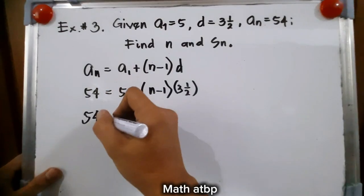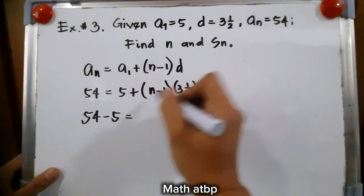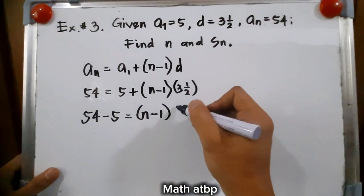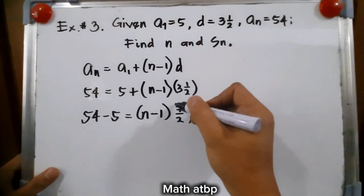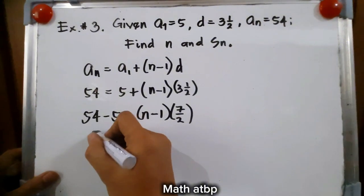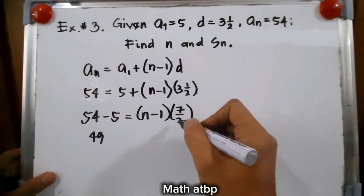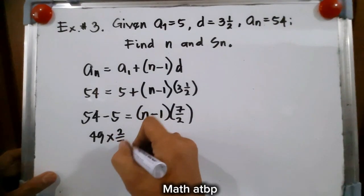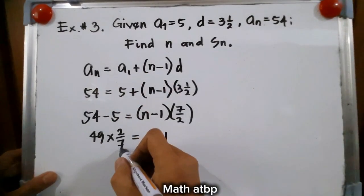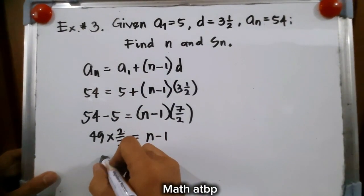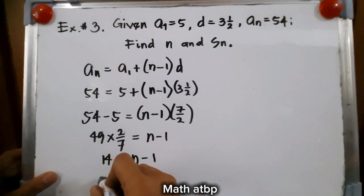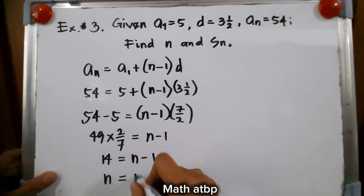We have 54 minus 5 equal to n minus 1 times 7 over 2. That is your 3 and a half, or 7 over 2. Then 54 minus 5 is 49. So 49 times 2 over 7 is equal to n minus 1. And 49 divided by 7 is 7 times 2 is 14. So 14 is equal to n minus 1, therefore n is equal to 15.